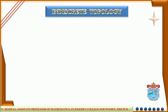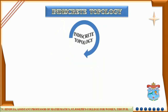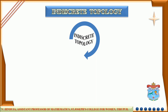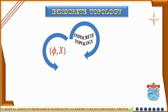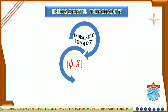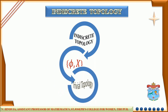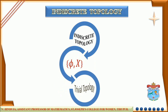Next, indiscrete topology. The indiscrete topology of a non-empty set, say X, is a collection of only two subsets, that is, the empty set and the set X. This indiscrete topology is also known as trivial topology.